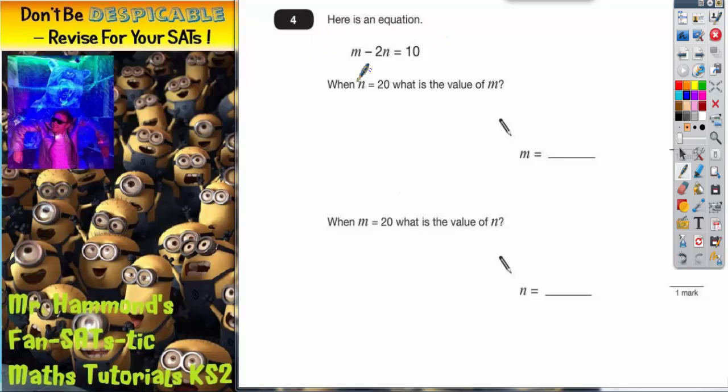Question 4. Here is an equation: m take away 2n equals 10. When n equals 20, what is the value of m?